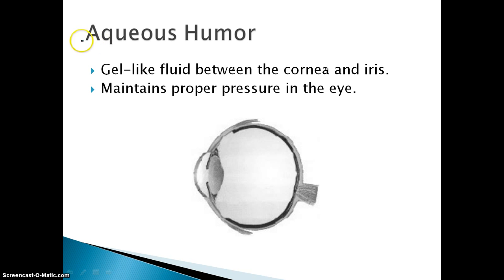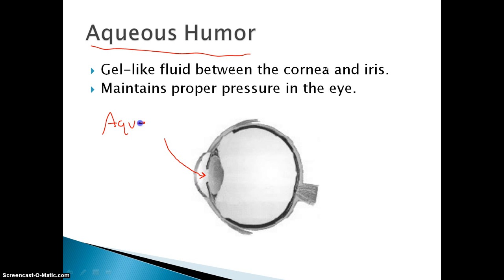We have two types of fluid in our eye. We have aqueous humor, and then we also have vitreous humor. Aqueous humor is a gel-like fluid that's between the cornea and the iris. In some textbooks they call it aqueous gel or aqueous fluid. Basically, all it does is help to maintain pressure inside of the eye — without it, our eye would be like a little sack flopping around, so we need liquid inside to give support and structure.